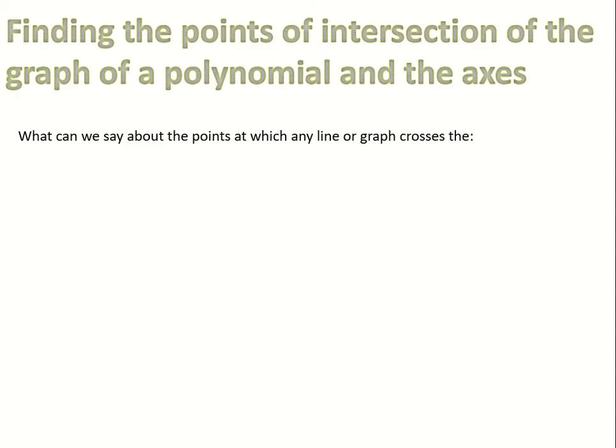The next part of polynomials is basically using it in context. We can use it to find the points of intersection of a graph of a polynomial and the axes. Further in this lesson, we're going to use it to find the points of intersection between two different graphs of polynomials, but they're virtually the same thing. If a line crosses the x-axis, then y equals 0, and if a line crosses the y-axis, then x equals 0.